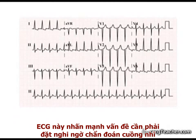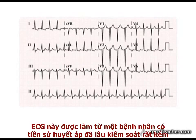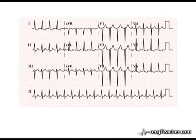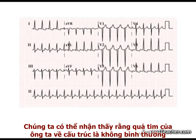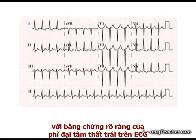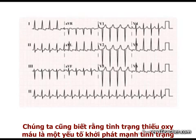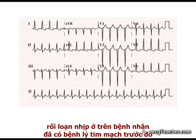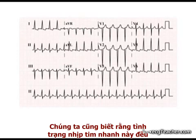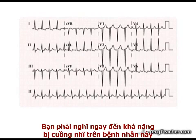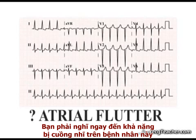This ECG emphasizes the importance of a high index of suspicion in the diagnosis of atrial flutter. The ECG is taken from a patient with a long history of poorly controlled hypertension, who presented with marked hypoxia secondary to bronchopneumonia. We note that his heart is structurally abnormal with clear evidence of left ventricular hypertrophy on the ECG. We are aware that hypoxia is a potent trigger of arrhythmias in the presence of heart disease. We also note that the tachycardia is monotonously regular with a heart rate of 150 beats per minute. This should immediately alert us to the possibility of underlying atrial flutter.